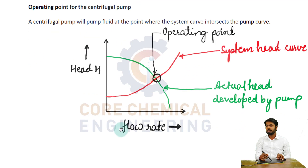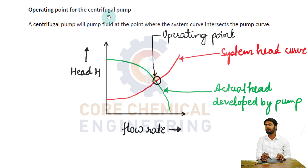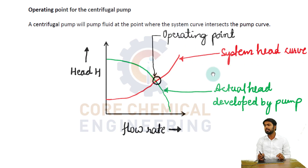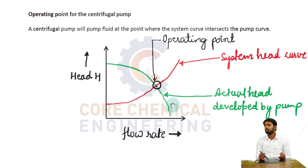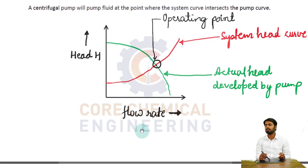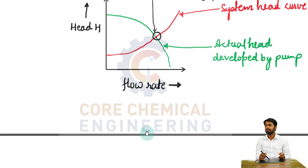Now the long-awaited question: the operating point for the centrifugal pump. If we draw both graphs on a single plot — the system head curve and the head developed by the pump — the point where both curves intersect is the operating point for the centrifugal pump.